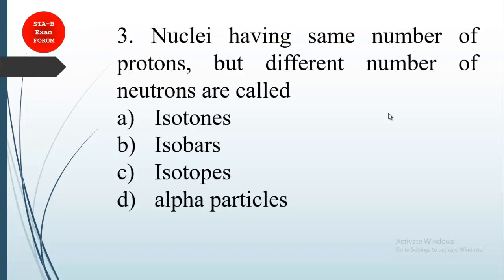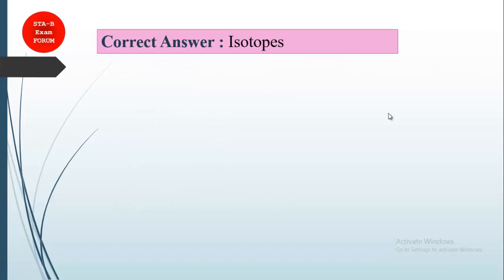Coming to the next question, it is from chemistry. Nuclei having same number of protons, but different number of electrons are called what? This is very simple. The correct answer is isotopes. Isotopes have same atomic number but different mass number. Same atomic number means they have same number of protons. Different mass number means they must have different neutrons in it. So the correct answer is option C, isotopes.